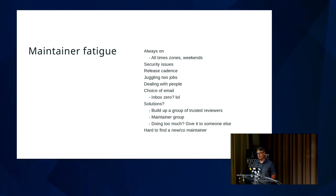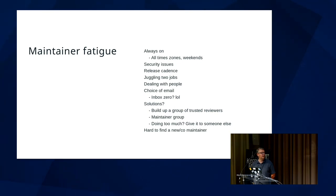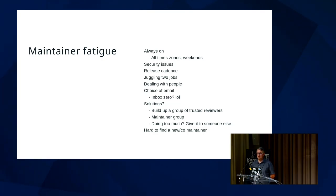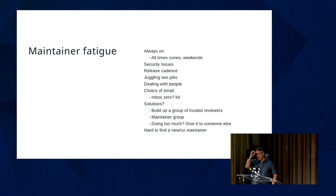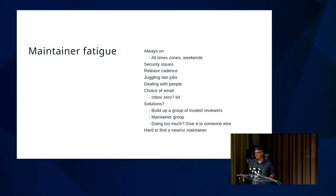Solutions to maintainer fatigue: build up a group of trusted reviewers to take some of the workload off. Some subsystems use group maintainership — x86 is a good example. Maybe you're just maintaining too many things and should give some away. I've done that — for FIO I found Vincent, who was continually contributing and answering issues on GitHub, asked him to be a co-maintainer, and now he's doing probably 90% of the work. But finding someone is generally very difficult, especially if you expect someone with the same work ethic. A prolific contributor today might not be prolific six months from now if their job situation changes.